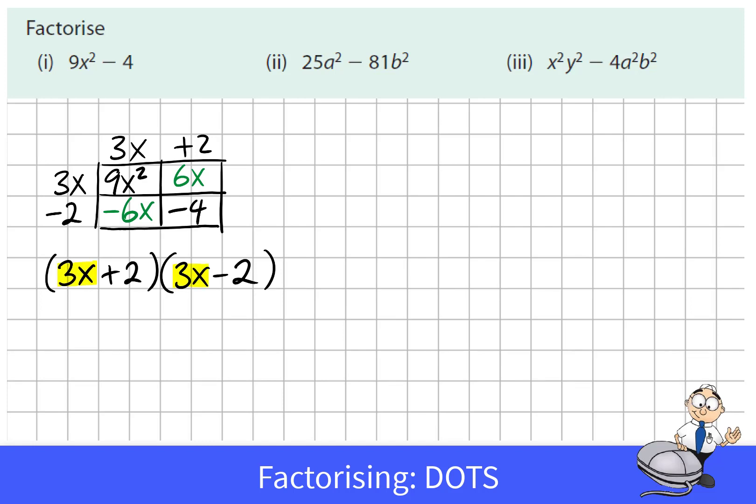This pattern is always there that we have the first term in each of these binomials is the same and the second term is the same size but different signs. So we have a positive and negative 2. Let's do the same with the second example.